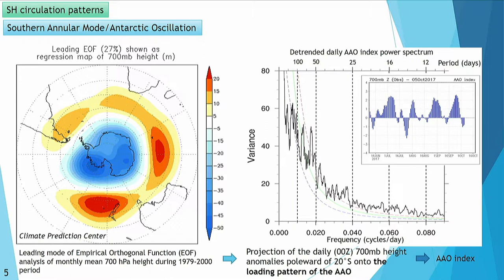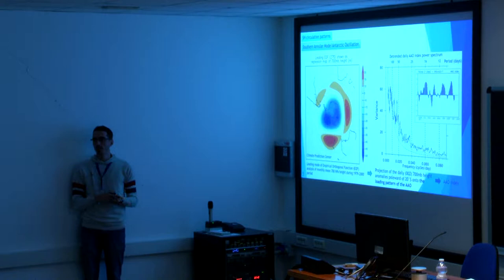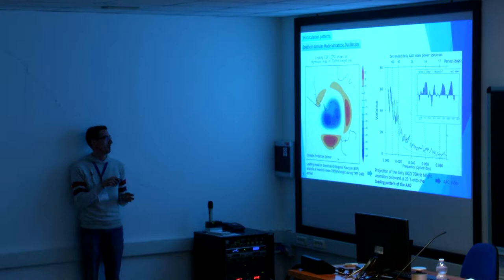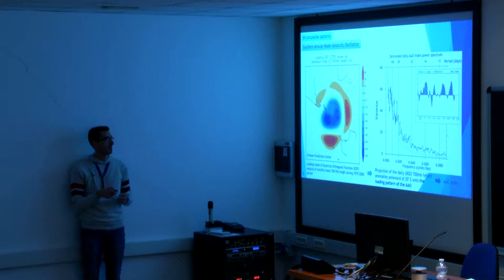Regarding Southern Hemisphere circulation patterns in middle to high latitudes, the leading pattern is the Southern Annular Mode, also known as the Antarctic Oscillation. This is computed as the leading EOF of 700-hectopascal geopotential heights. There is a negative anomaly of geopotential height in the Antarctic region and positive anomalies to the north with three different centers — over the South Atlantic, South Indian Ocean, and Eastern Pacific Ocean. This is the positive phase of the Southern Annular Mode, which will enhance the westerlies in the region. By projecting daily data over this EOF, you can get the daily AAO or SAM index.